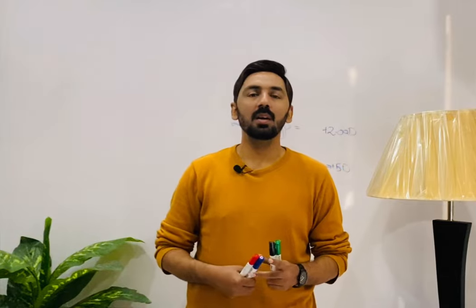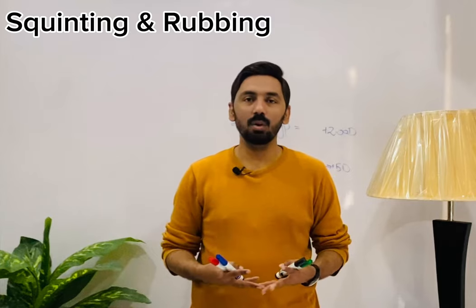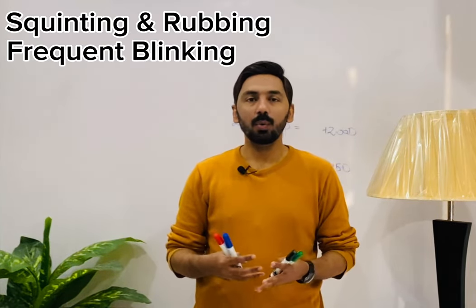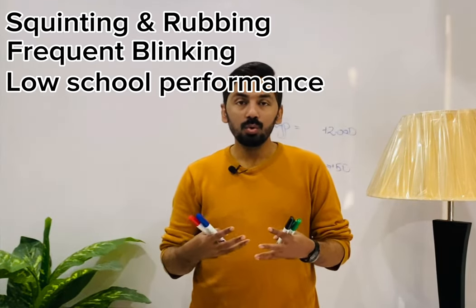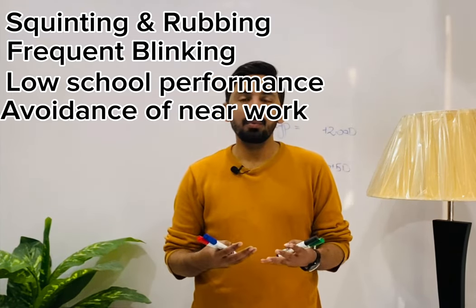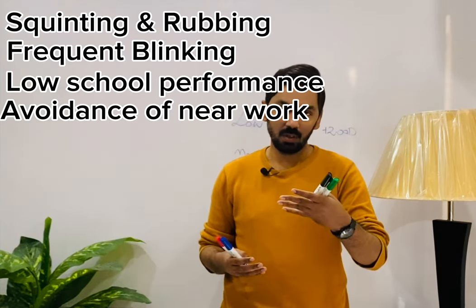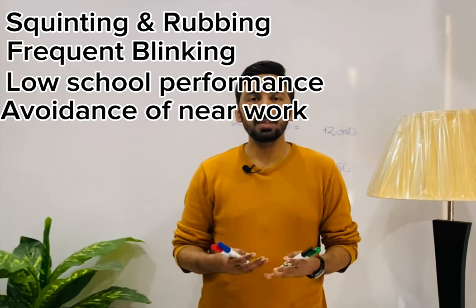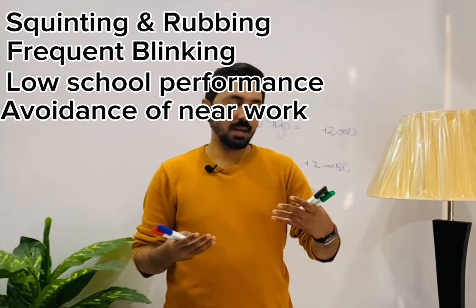The clinical signs and symptoms of hypermetropia include: squinting and rubbing of the eyes, frequent blinking, low school performance, and avoidance of near work. The hyperopic patient will face difficulties in reading because of loss of accommodation — the hyperopic patient uses their accommodation at distance, so there is nothing left for near work.